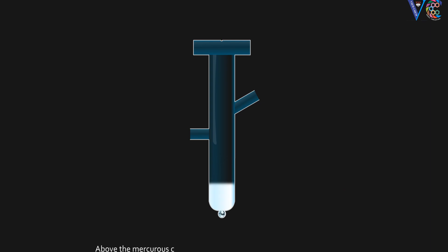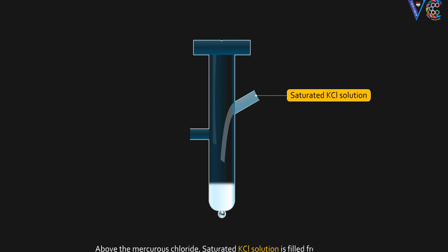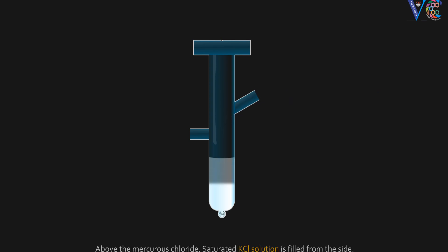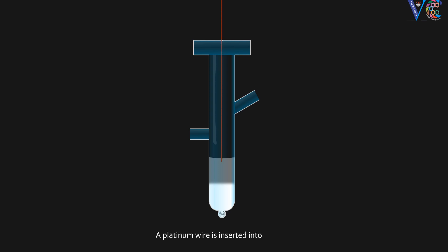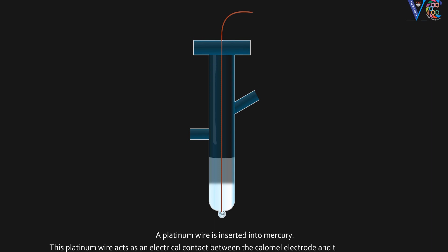Above the mercury, a paste of mercurous chloride — that is, calomel — is kept. Above the mercurous chloride, saturated KCl solution is filled from the side arm. A platinum wire is inserted into the mercury. This platinum wire acts as an electrical contact between the calomel electrode and the electrical circuit.